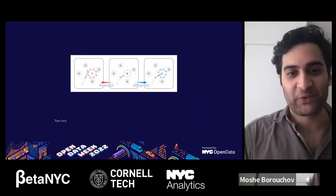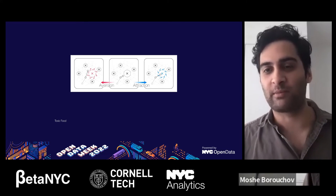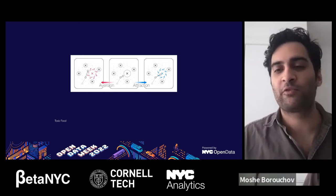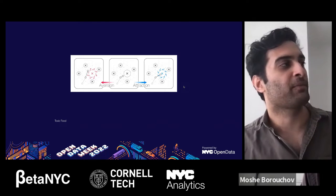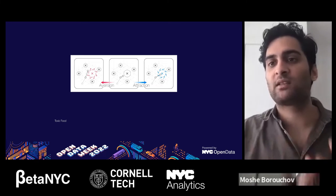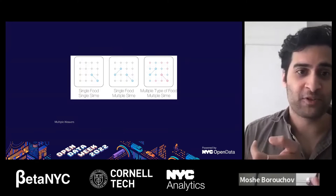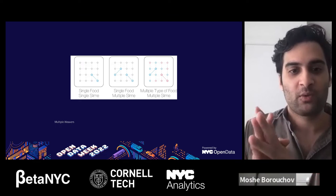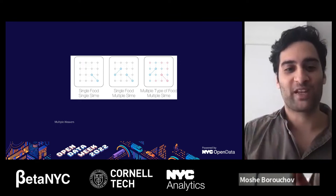We started with a 2D dimension, augmented it to 3D, but we wanted more. So we introduced the idea of toxic food — pieces on the grid that make the Weaver feel sick and induce aversion. Once the Weaver encounters toxic food during its exploration, instead of consuming it, it goes around and avoids it. To make things even more interesting, we explored what happens when two Weavers operate in the same environment with two sets of food, where each Weaver's food is toxic to the other — so each set is edible for one Weaver and toxic for the other.